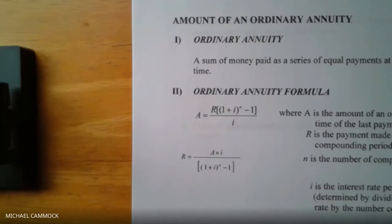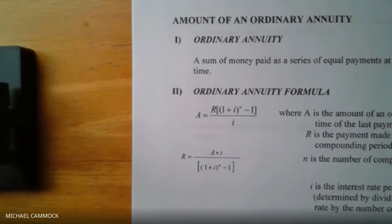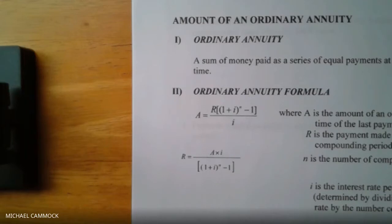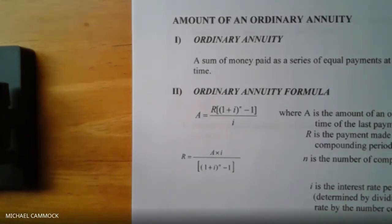Let me describe what an annuity is. When we talk about investing in the bank, we normally talk about it like a one-shot deal — you put ten thousand dollars in one day and come back ten years later. But most people don't invest that way. Most people invest money on a regular basis, going into the bank every month, every three months, or every year and putting a certain amount in.